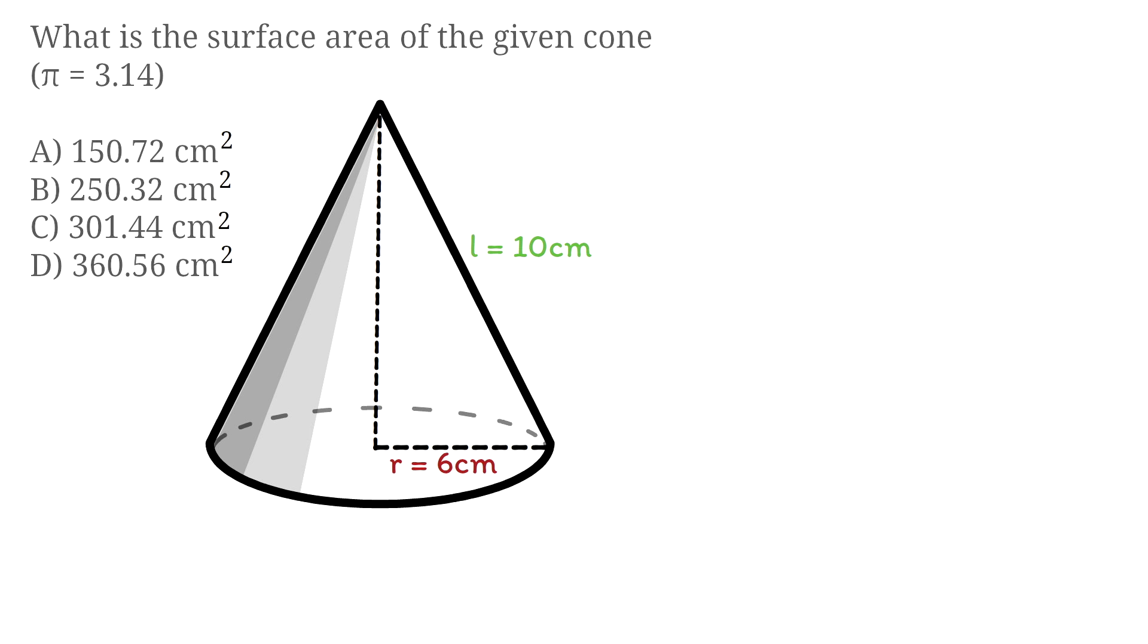What is the surface area of the given cone? A) 150.72 cm², B) 250.32 cm², C) 301.44 cm², D) 360.56 cm². To determine the total surface area of the cone, we'll use the formula πr² + πrl. This formula will be given to you on the GED, so no need to memorize.